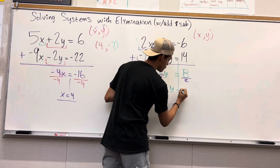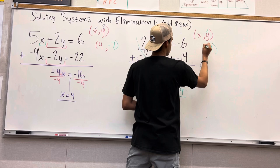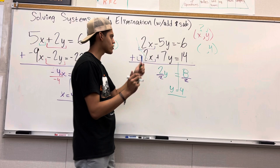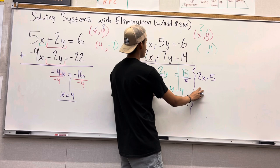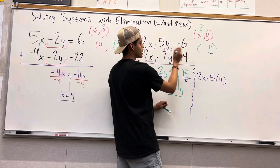Now, we have half of the problem solved. There we go. We are still looking for our x. Now, we can plug it into the first equation or the second equation. I am going to plug it into the first one. 2x minus 5, separate it, minus 5 times 4 because that is what we are trying to plug in right here. This y, because we solved for y, equals negative 6.